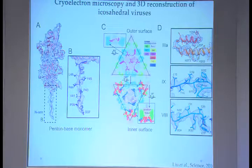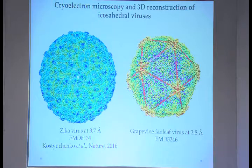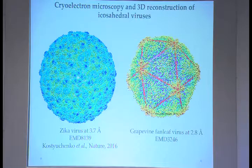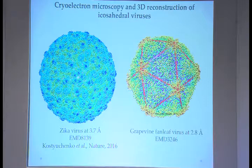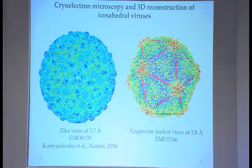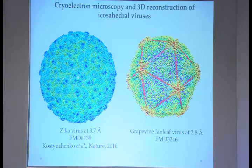From 3.6 Å, we are now down to 2.8 Å. Recent virus structures in EMDB include Zika virus at 3.7 Å, solved by Bhimulok's laboratory and published in Nature, and grapevine fan leaf virus at 2.8 Å. Cryo-EM structures in terms of resolution are really approaching the resolution of crystal structures.